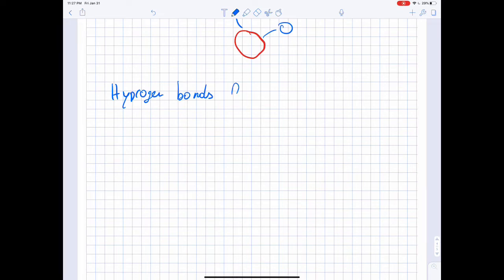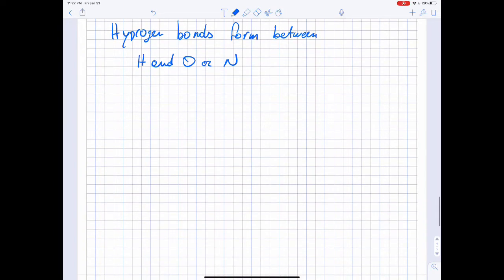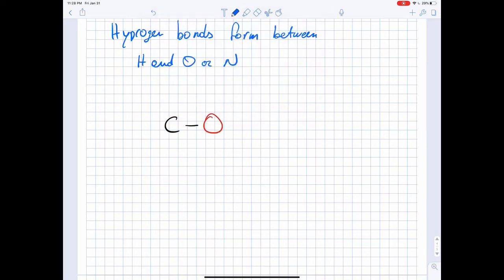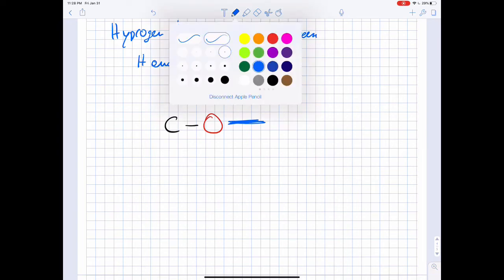Hydrogen bonds form between H and O, oxygen or nitrogen. So those are some of the examples. We have an atom of carbon that is linked with oxygen, and this oxygen makes a hydrogen bond with a hydrogen that is linked to a nitrogen.